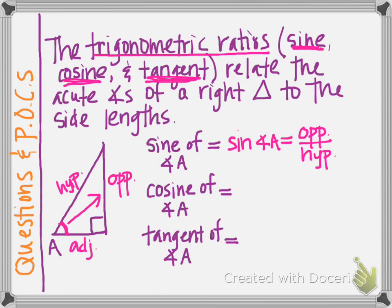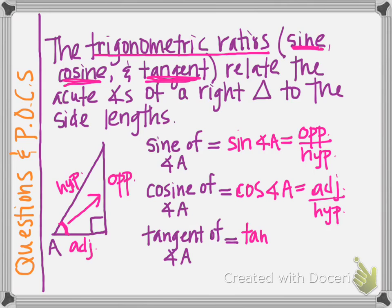The cosine of angle A is written like this. Cosine is represented by C-O-S — please always say cosine. The cosine of angle A is equal to the adjacent leg's length over the hypotenuse's length. The tangent of angle A is represented with T-A-N, but we say tangent. Its definition is the opposite leg over the adjacent leg. It does not involve the hypotenuse.